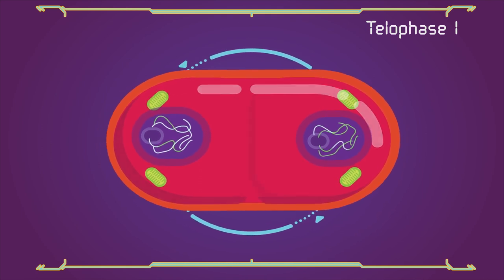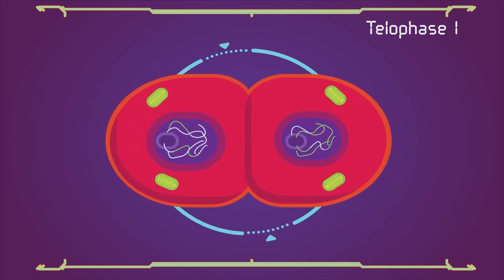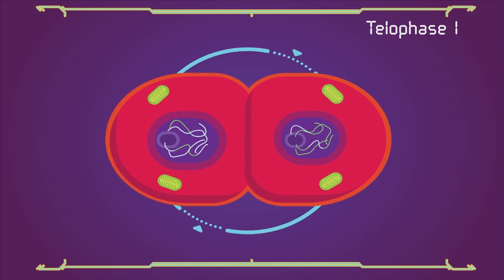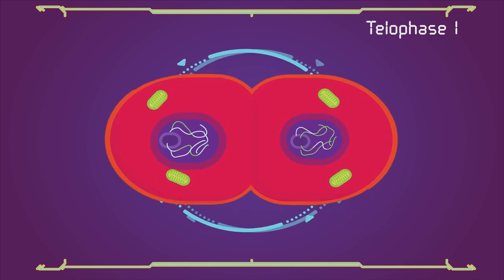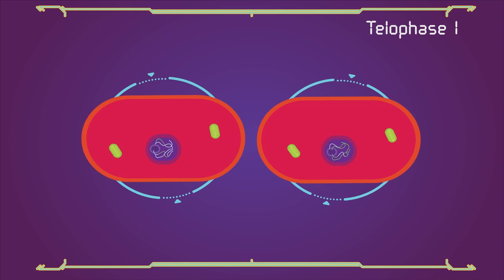Cytokinesis, the pinching of the cell membrane in animal cells, or the formation of the cell wall in plant cells occurs, completing the creation of two daughter cells.